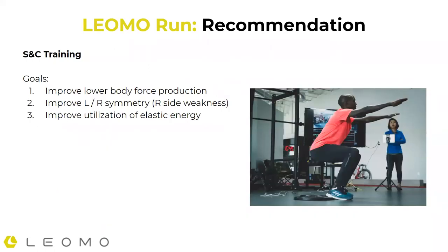I'm a big advocate for strength and conditioning training, and I always like all the athletes I work with to be supplementing their primary training through S&C methods. From this run data, even without doing a functional movement assessment in the gym — say if they're remote or traveling — I can already draw pretty good individual conclusions and start to plan better strength training programming so they're not wasting their time in the gym. For this runner, the main focus areas would be improving lower body force production, improving left-right symmetry especially on the right side, and improving the utilization of elastic energy.